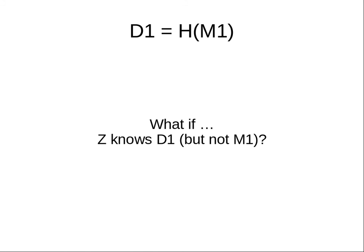The one-way property of hash functions: if Z knows D1 but doesn't yet know M1, can they find M1? We assume no. The one-way property means that if you have the hash value, you can't go backwards to get the original message. That's the property we require for some security features. If you have the message, you can easily calculate the hash of it — but if you have the hash value, you can't easily recover the original message.